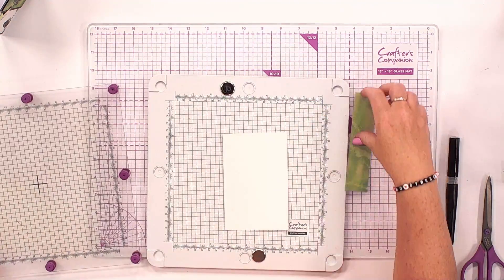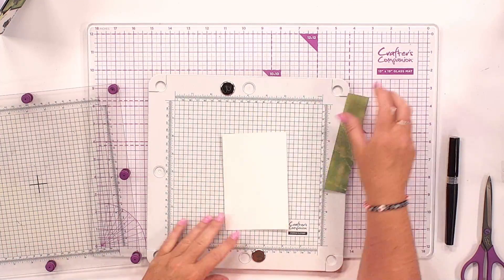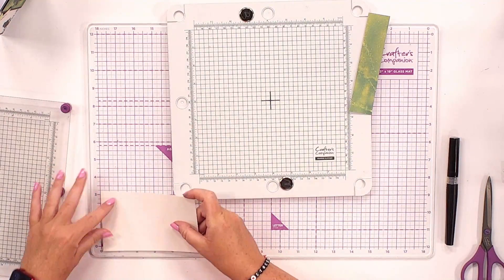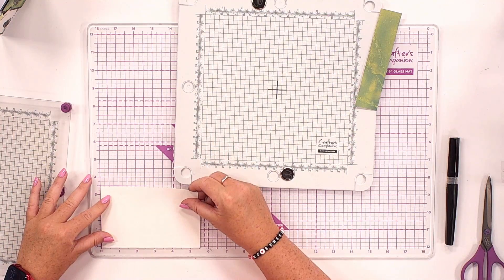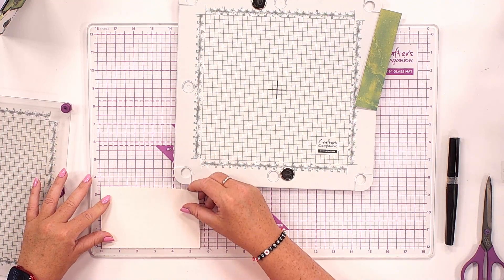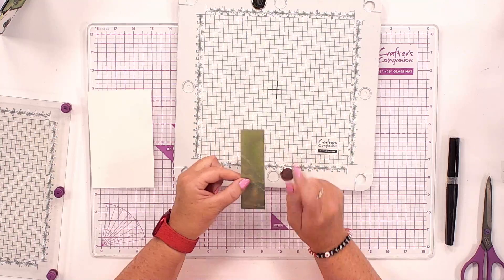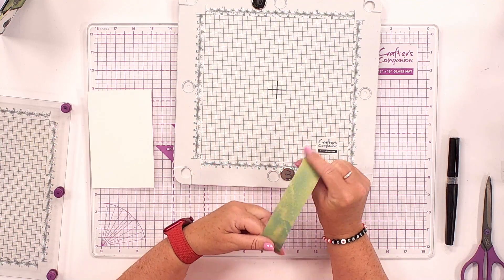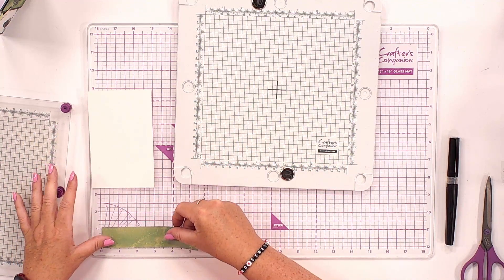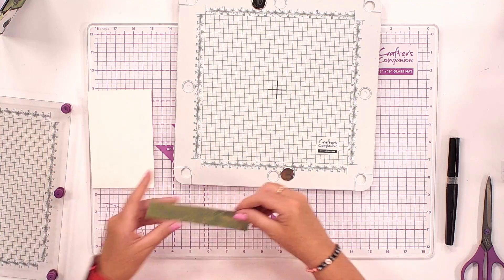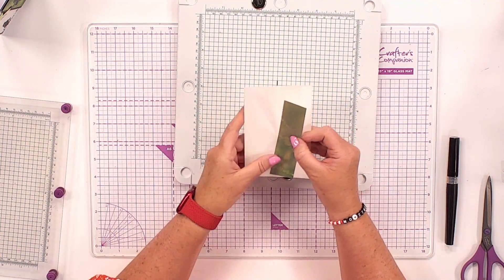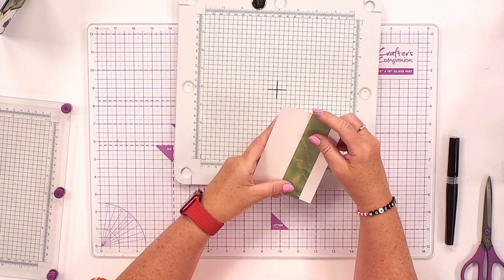But what I also want to do, I want to stamp onto this green strip. I'm going to give you the measurements just so you know. We've got our five and a half by three and a half, and then this little strip that I've created, just an off cut from one of our papers, this is one and a quarter by five and a half.